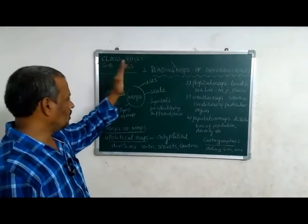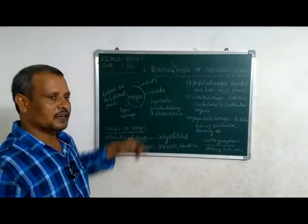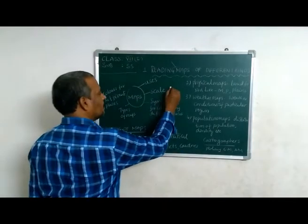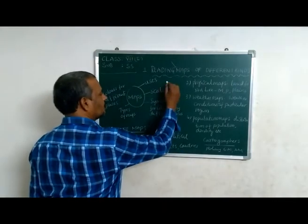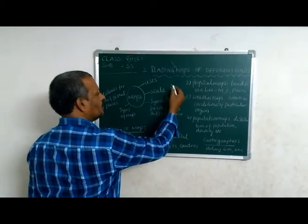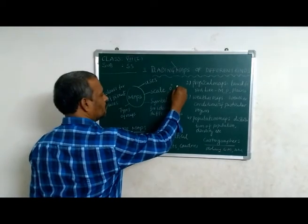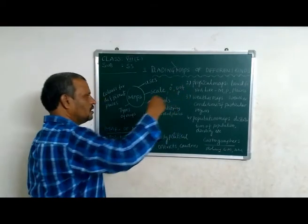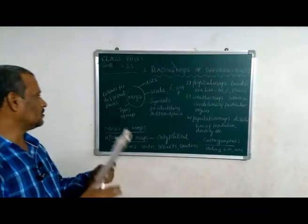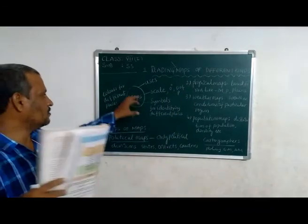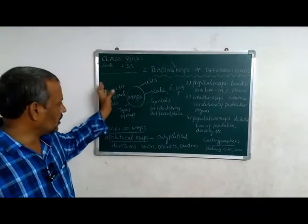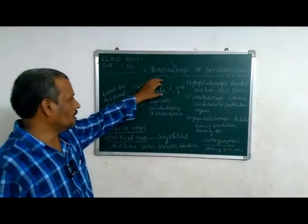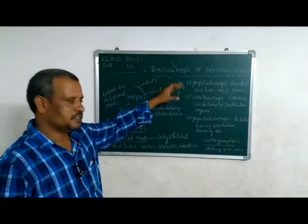What are the components of a map? Scale, degrees, and distance from place to place. These are the components of maps.